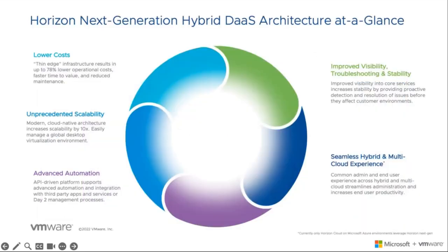At a quick glance, Horizon Next Gen offers lower costs, scalability, advanced automation, improved visibility, troubleshooting, and stability, as well as a seamless hybrid and multi-cloud experience. From the lower cost perspective, it's lower because there's a thin edge infrastructure that results in up to 78% lower operational costs. This thinner edge will demonstrate faster time to value and reduced maintenance because there are fewer areas where you need to maintain.